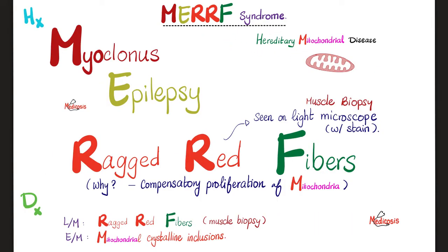The third hereditary mitochondrial disease is MERRF syndrome. What does the M stand for? Myoclonus — a muscle problem. E stands for epilepsy, a nervous system problem. And RRF stands for ragged red fibers, seen when you do a muscle biopsy and look under light microscopy with a special stain. Why are the muscle fibers ragged? Because of compensatory proliferation of mitochondria — when the body finds the mitochondria cannot perform their function, it keeps making more, but to no avail. Diagnosis: history, physical exam, muscle biopsy showing ragged red fibers on light microscopy, mitochondrial crystalline inclusions on electron microscopy, and genetic testing.